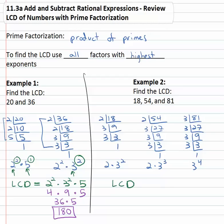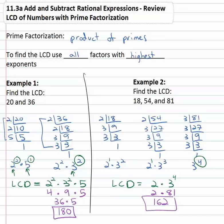The least common denominator or least common multiple of these numbers is going to use all factors with the highest exponent. We saw factors of 2 and 3. On 2, both had an exponent of one. On 3, the highest exponent was four. So the least common denominator is 2 times 3 to the fourth. Three to the fourth — doing exponents first, order of operations — is 81, and two times 81 is 162. The least common denominator or least common multiple is 162, found by using all factors with the highest exponents.